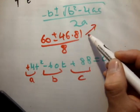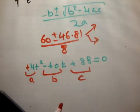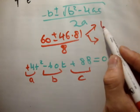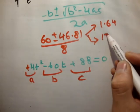So, now, if you look at this, now, both of those will give you a positive number. So, let's just have a look at this. 60 minus 46, first of all, divided by 8. The first answer is 1.64. And the other one is 13.3.